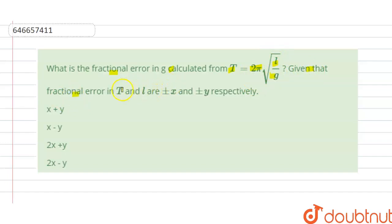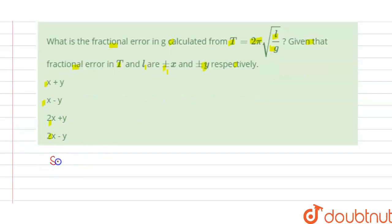Given that fractional error in T is plus minus x and fractional error in L is plus minus y respectively. We have ABCD options are given here. So we have to find the correct option.